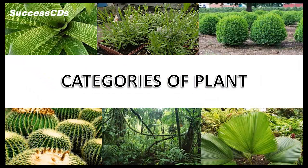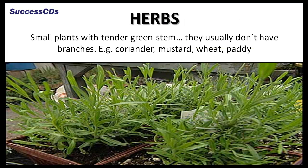Plants can be grouped into a few categories based on different characteristics. They are herbs. Small plants with tender green stems, usually having no branches, are called herbs. Coriander, mustard, wheat, and paddy fall under this category.